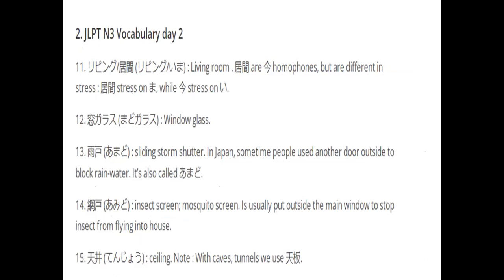Here is the day 2 vocabulary. Ribingu means living room, or ima — ima is also living room. Next is madogarasu: mado is window, garasu is glass, so window glass. Amado — in Japan, sometimes people use another door outside to block rainwater, this is called amado.